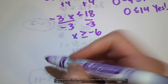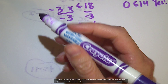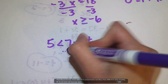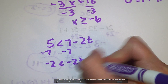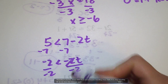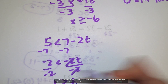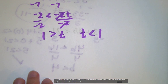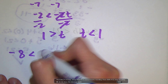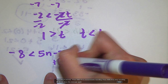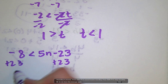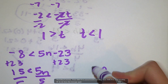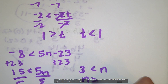For B: 5 is less than 7 minus 2t. Subtract 7 from both sides, getting negative 2 is less than negative 2t. Divide by negative 2 — dividing by a negative, so flip the sign — giving t is less than 1. You could check 0 since 0 is less than 1. For C: negative 8 is less than 5n minus 23. Add 23 to both sides, getting 15 is less than 5n. Divide by 5, giving n is greater than 3. Rewrite it with the variable first so you know you're reading it correctly.